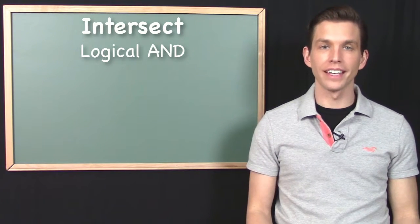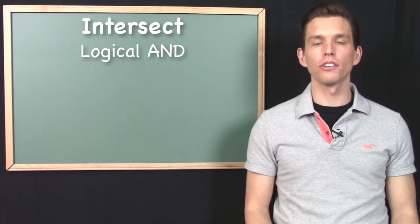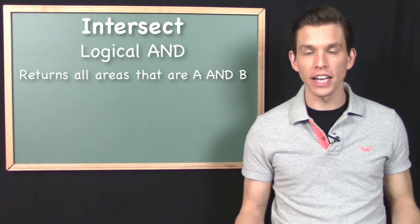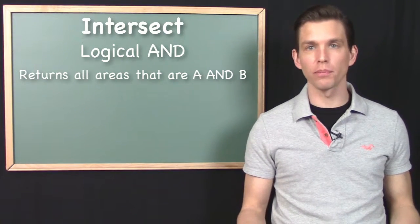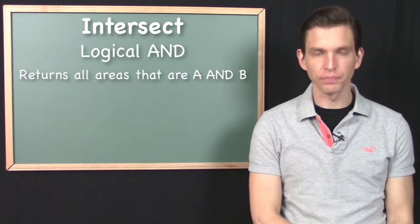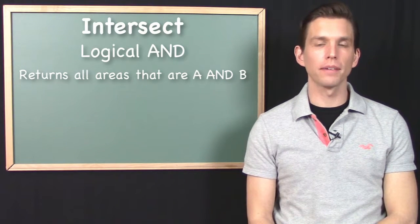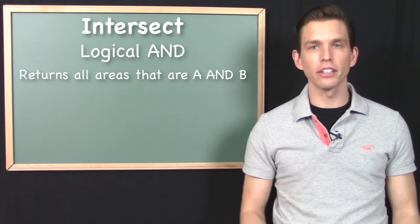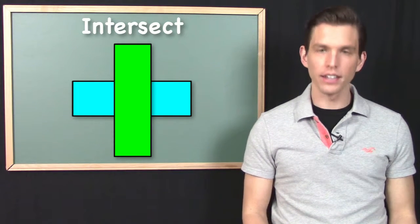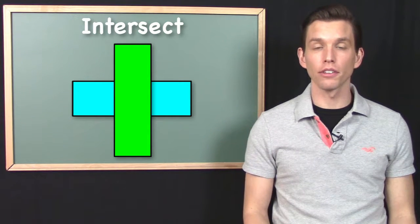Its logical operator is the AND operator — logical AND. So whenever you're in a situation where you need to know all of the areas that are A, whatever A is, and that are B, whatever B is, the tool that you need in order to get at that information is the intersect tool. Let me show you what that means in terms of geometry. Let's take a look at these two vector data files — two different data files, one rectangle in each.